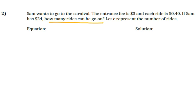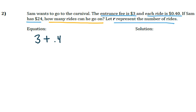Sam wants to go to the carnival. The entrance fee is $3 — so there's one element. Each ride is 40 cents. He has $24, and R represents the number of rides. If he goes to the carnival and tries to go in, he's got to pay $3 — that's the first thing in our equation. Then he's going to try to ride some rides, so he's going to pay 40 cents per ride. We don't know how many, so we call that R. He's going to pay 40 cents R times until he reaches his total of $24. Now we can draw a line down from our equal sign and solve this equation.